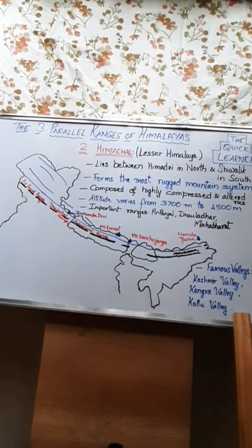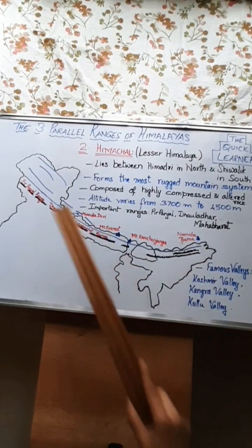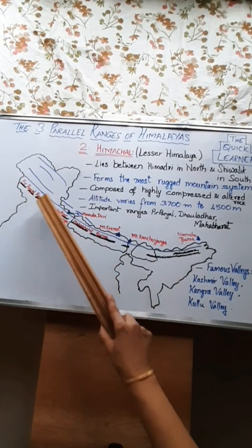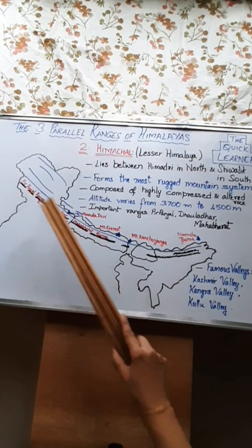The famous valleys in this area are the Kashmir valley, Kangra valley, and Kulu valley.